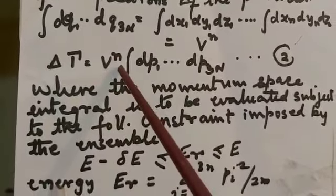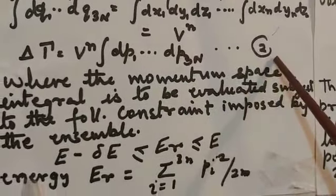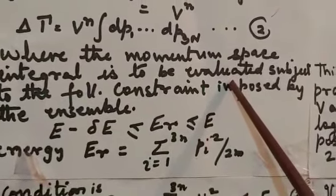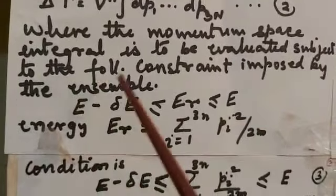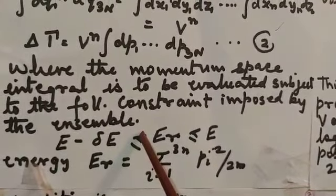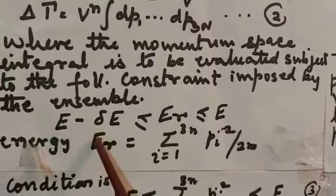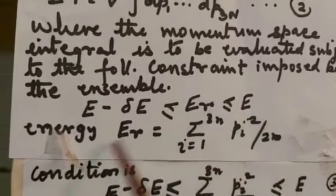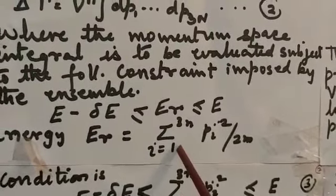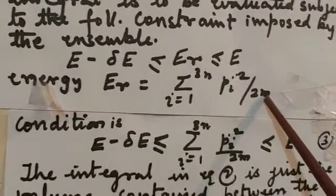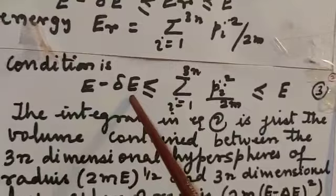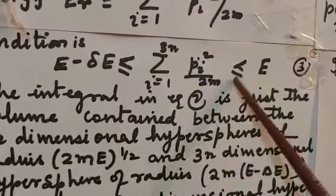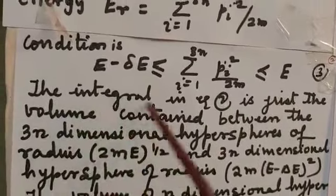So delta tau is V^N times integral dp1 to dp3N — this is equation 2 — where the momentum space integral is to be evaluated subject to the following constraint imposed by the ensemble. Since we are dealing with momenta, there is an energy constraint: E minus delta E << E_R <= E. The energy E_R is summation i = 1 to 3N of pi squared / 2m, and the condition is E minus delta E <= summation pi² / 2m <= E. This is equation 3.